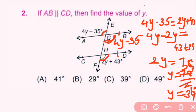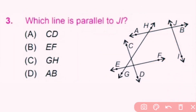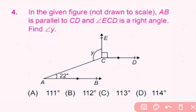Question number 3: Which line is parallel to JL? Here JL is parallel to CD, so A is the correct answer. Question number 4: In the given figure, AB is parallel to CD and angle ECD is a right angle. Find angle y. Given that this angle is 90 degrees and CD is parallel to AB, they intersect at points C and A.